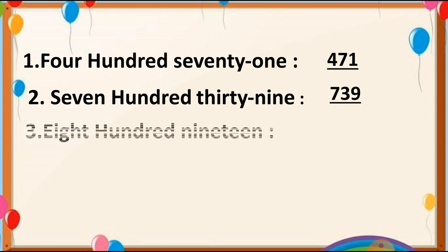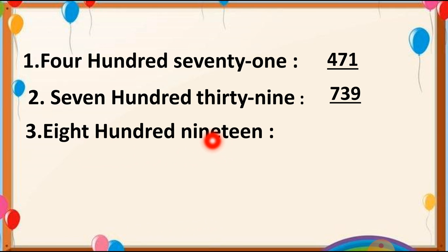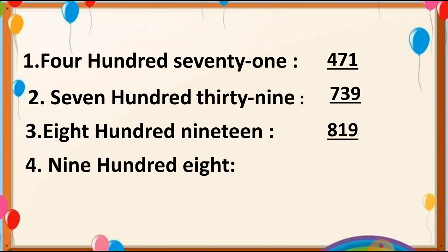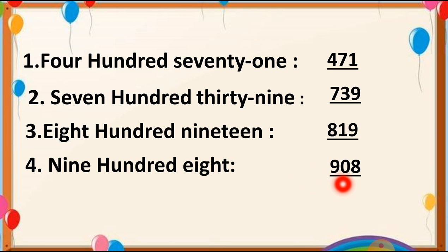Number 3: 800 and 19 — 819. We put 8 at the 100's place and 19, meaning 1, 9. So we write 819. Number 4: 908. At the 100's place we put 9, and at the 1's place we put 8. But at the 10's place there is nothing, so we put 0. So we write 908.